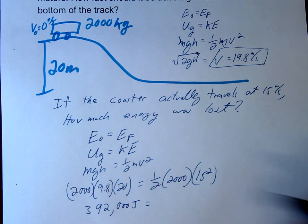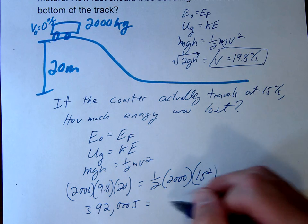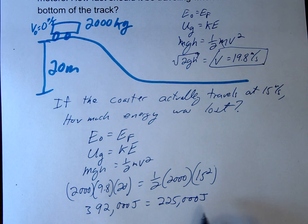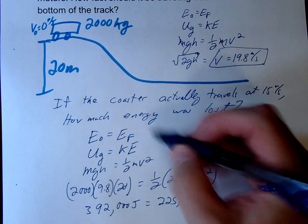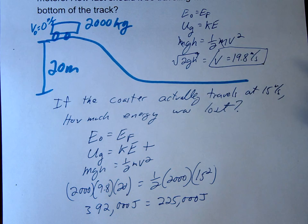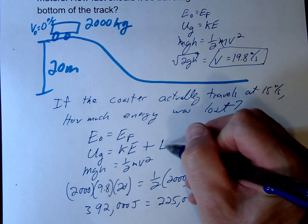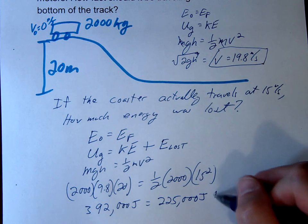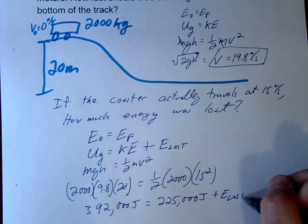So this is the energy we start with at the beginning. When we do our 1 half MV squared, we're going to get 225,000 joules at the bottom. So you can see, we started with 392, we ended with 225. So the question is, what happened? Well, we lost some energy. And so in our equation, what we're going to do is we're going to say, let's add our energy lost.